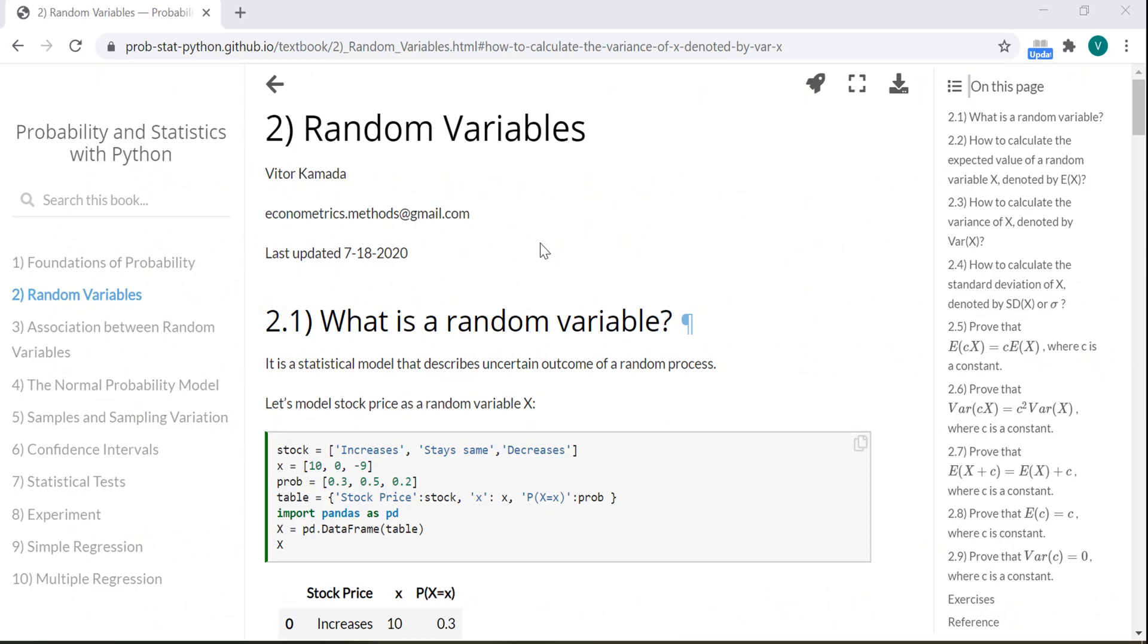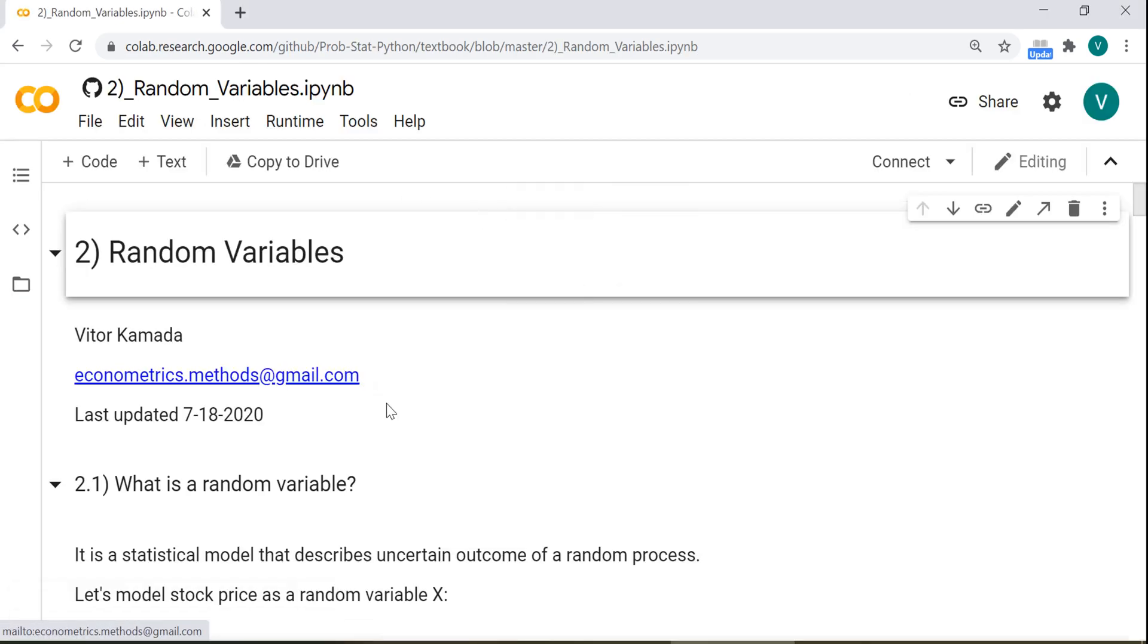We are here in Chapter 2, Random Variables. Let's open this in Jupyter Notebook. Here, the rocket symbol and the Colab. Now it's opening in Google Colab.